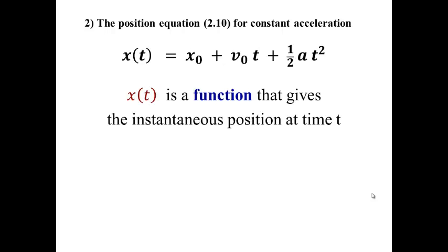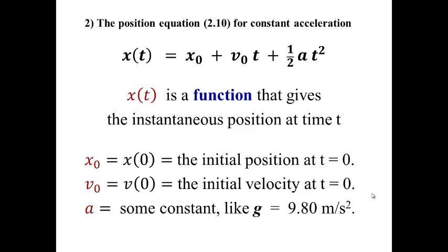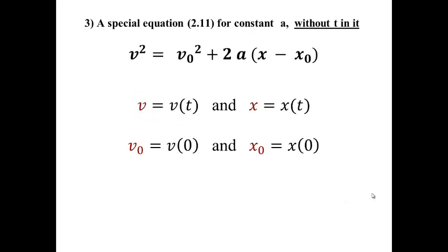x(t) is, again, a function. It gives us the instantaneous position at a particular time. x₀ is the position at t equals 0, v₀ is the velocity at t equals 0, and a is some numerical constant like g, the acceleration of gravity, that we'll use to be 9.80 meters per second squared.